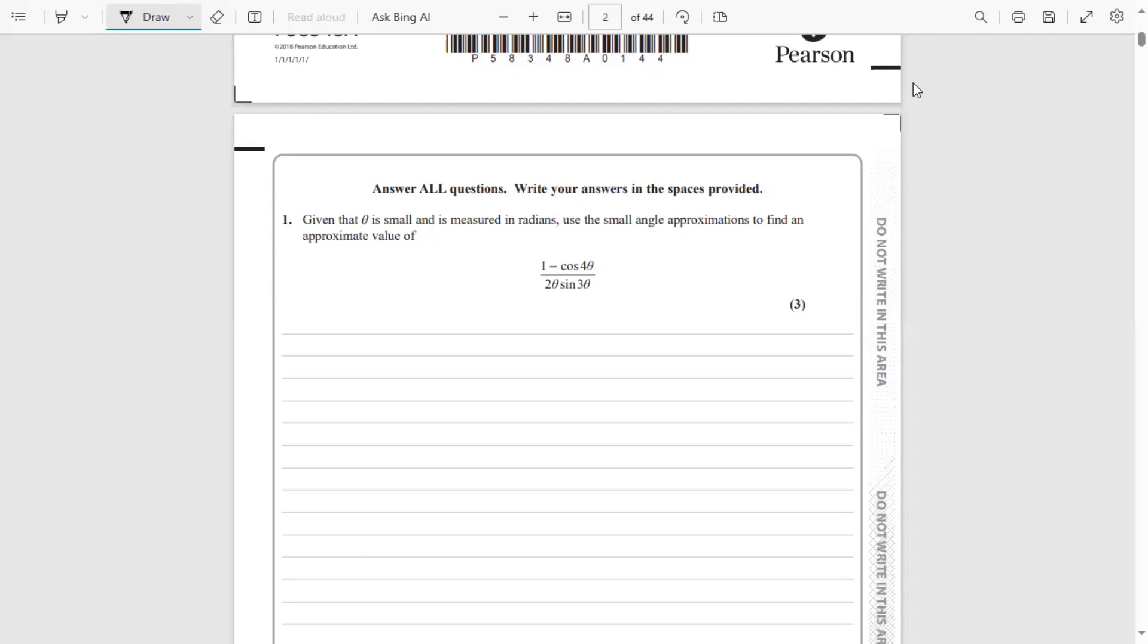Question one: given that theta is small and measured in radians, we want to use small angle approximations to find an approximate value of (1 - cos 4θ) divided by 2θ times sine 3θ.